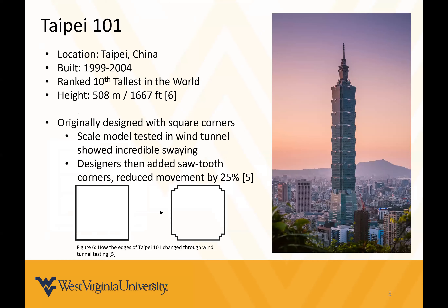Taipei 101 is located in Taipei, China. It was built between 1999 and 2004 and is currently ranked the 10th tallest building in the world at 508 meters, or roughly 1600 feet. It was originally designed to have square corners, but when a scale model was tested in a wind tunnel, it showed crazy amounts of swaying and oscillations that would cause structural damage. Designers then added sawtooth corners, which ended up reducing the movement of the building by 25 percent.